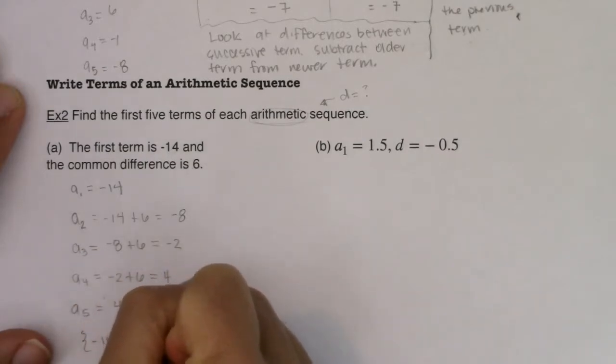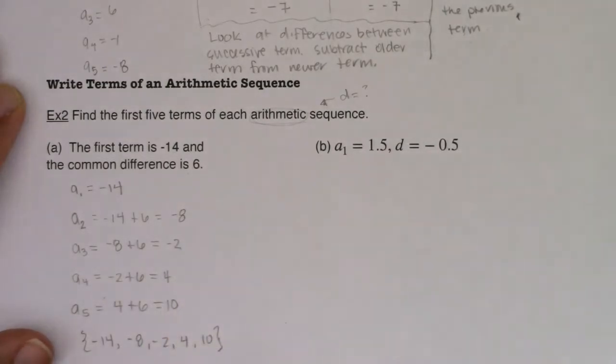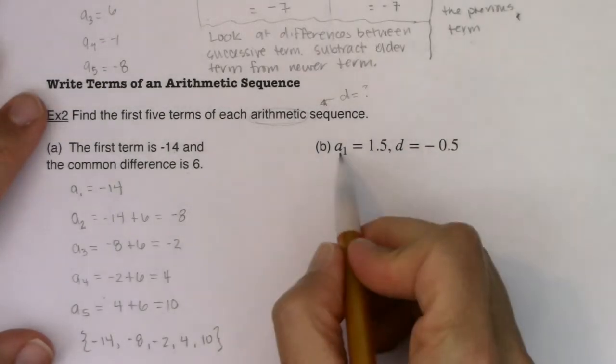We went to negative eight, negative two, four and 10. There is my arithmetic sequence. And you can see my common difference of six.